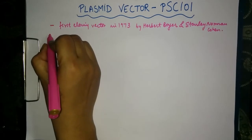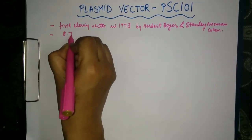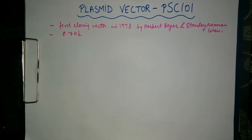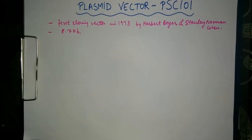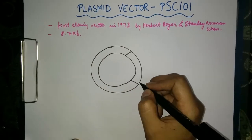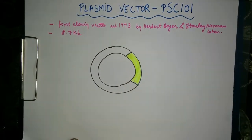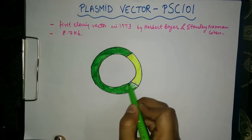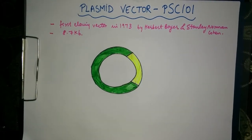The size of this plasmid vector is 8.7 KB. Let me just draw a diagram to illustrate its features.